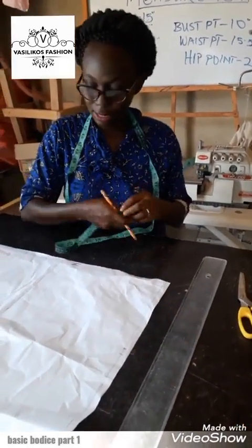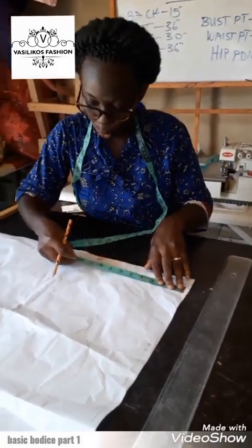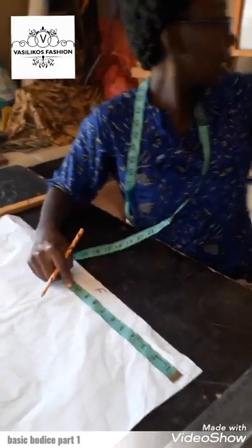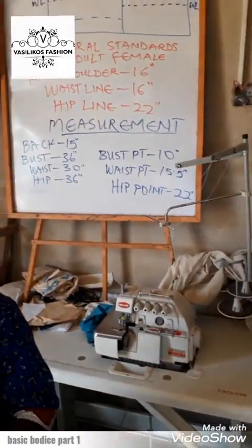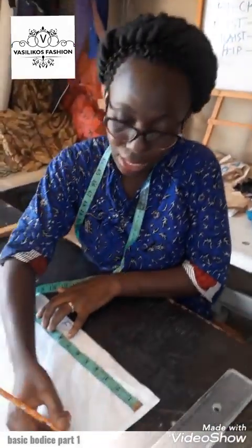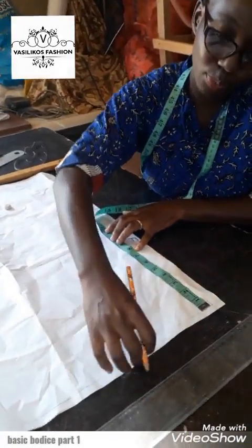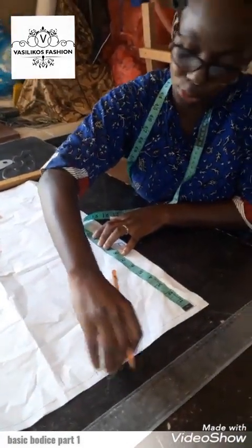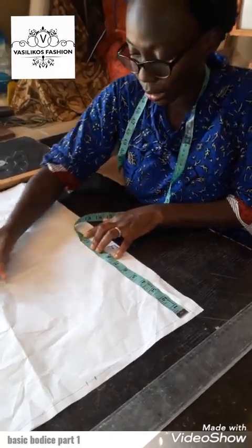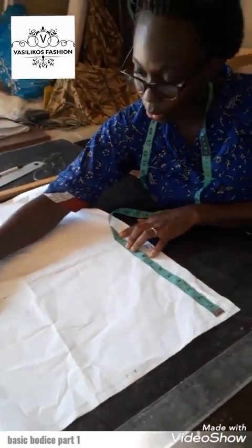The next thing we'll be doing is mark our bust point. Our bust point from the shoulder is 10 inches. I am adding half inch, which is 10.5. The reason I'm adding half inch is because by the time we are sewing and we pick half inch from the shoulder, it is still going to shift a bit up. So this is my bust point — I have marked it.